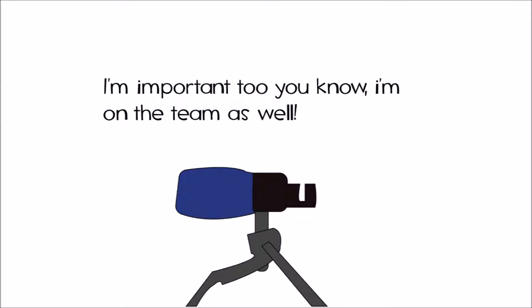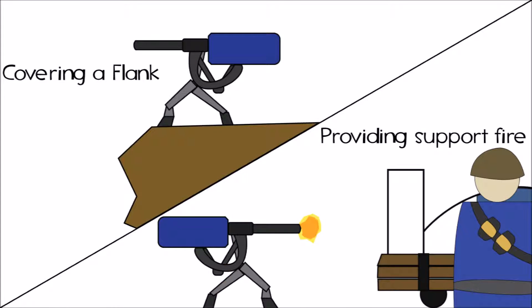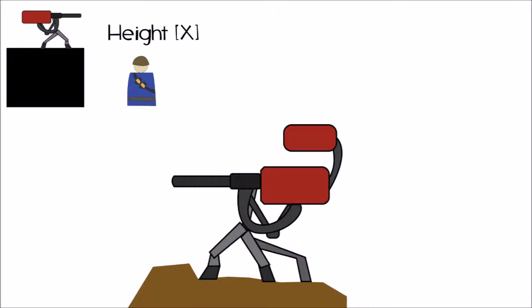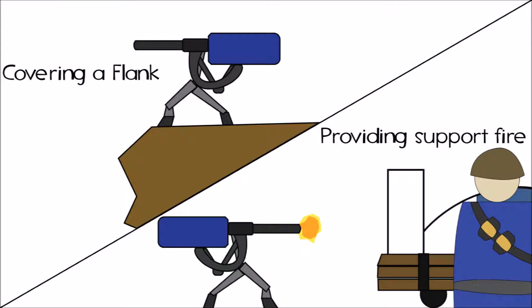For Blue, however, the Sentry Gun doesn't need as much attention to placement, but it is still necessary to think about strategically, because where you plant it will determine what job it has to do, whether it be covering a flank, or providing cover for your team's push. So that's what you want to keep in mind for Sentry placement, a location that gives your Sentry the height advantage and covers the most area, while forcing the enemy team to confront it if on Red, and to cover a flank or provide cover for a push if on Blue.